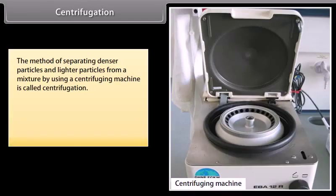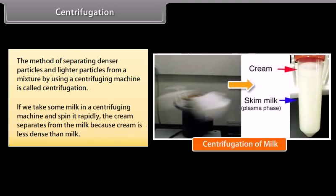Centrifugation. The method of separating denser particles and lighter particles from a mixture by using a centrifuging machine is called centrifugation. For example, if we take some milk in a centrifuging machine and spin it rapidly, the cream separates from the milk because cream is less dense than milk.